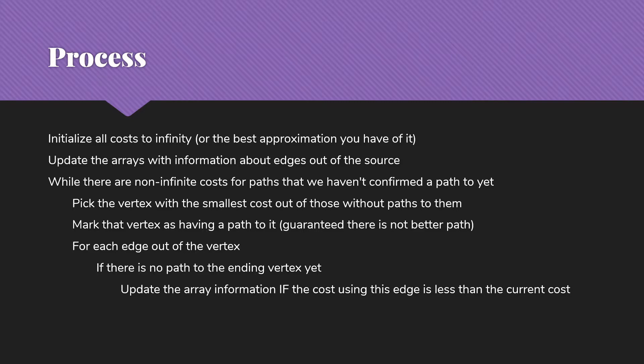We're going to say, okay, this path we're going to pick. Then for each edge out of that vertex, we're going to update our array information. But as we update the information, we're going to need to check to make sure that the cost of going to this node through this vertex is cheaper than the cost we currently have recorded.